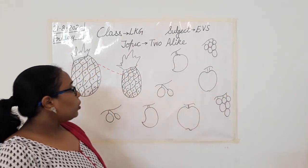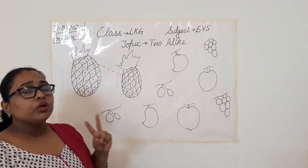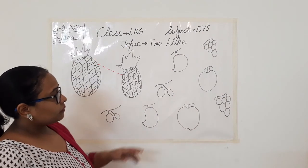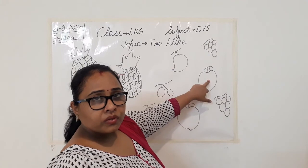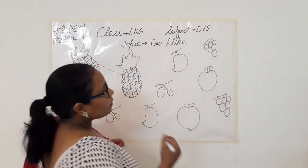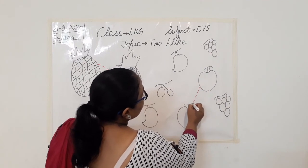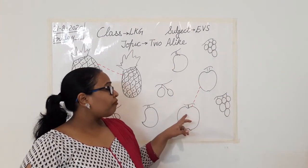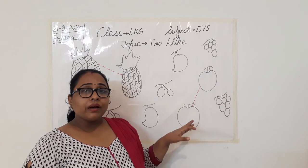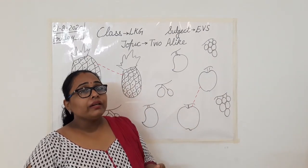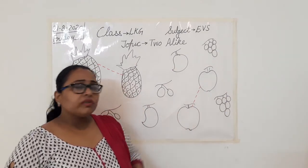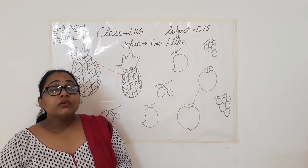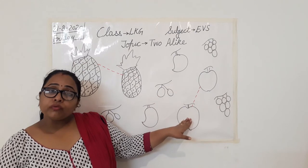Can you search for two apples? Yes, I have drawn two apples on the board. Can you search where those two apples are? One, two — so these are the two apples we have. They are similar in their look, so I'll join them like this. Now what is the color of apple? Apples are red from outside and white from inside. What is the taste of this fruit? They are sweet — the taste of this fruit is sweet.